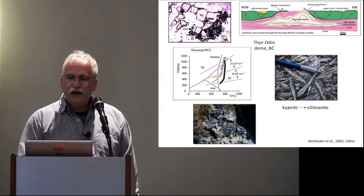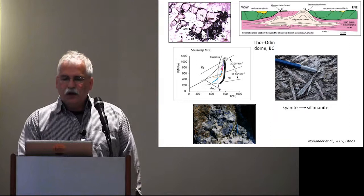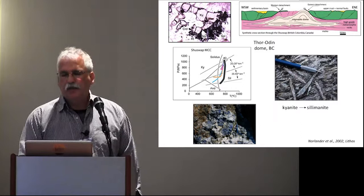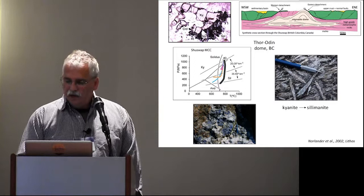Overall, we have a path that follows kyanite to sillimanite, as you can see on this P-T diagram. The solid black line corresponds to the path derived using metamorphic petrology, and the other colored lines are derived from models that we have run, which we will see later.